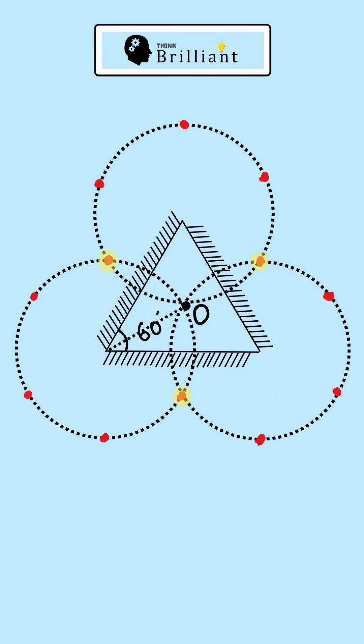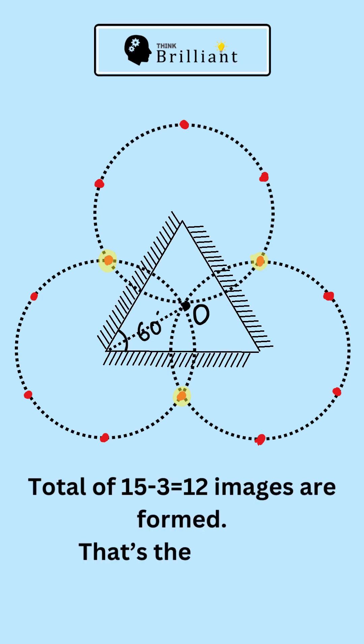But wait, that's not the answer. Due to the symmetry, three images overlap and appear as a single image. Hence, a total of 12 images are seen in the mirrors.